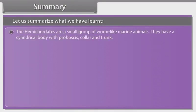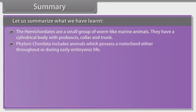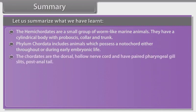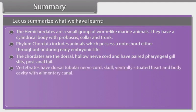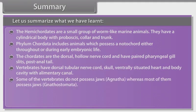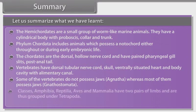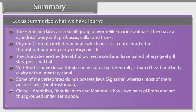Summary: Hemichordates are a small group of worm-like marine animals with cylindrical body having proboscis, collar and trunk. Phylum chordata includes animals which possess a notochord either throughout or during early embryonic life; chordates have a dorsal hollow nerve cord, paired pharyngeal gill slits and a post-anal tail. Vertebrates have a dorsal tubular nerve cord, skull, ventrally situated heart and body cavity with alimentary canal. Some vertebrates do not possess jaws (agnatha), whereas most of them possess jaws (gnathostomata). Classes Amphibia, Reptilia, Aves and Mammalia have two pairs of limbs and are thus grouped under tetrapoda.